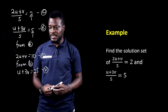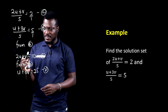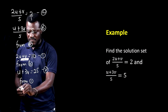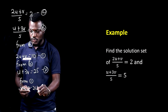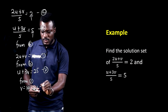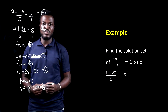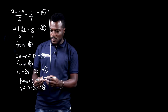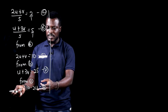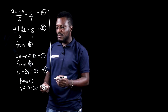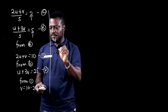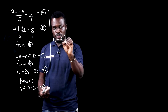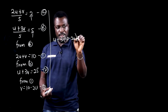We are going to use the substitution method. From equation 1, let's make v the subject: v = 10 − 2u. We'll call this equation 3. We then substitute equation 3 into equation 2 — since we derived v from equation 1, we can't substitute it back into equation 1 again.